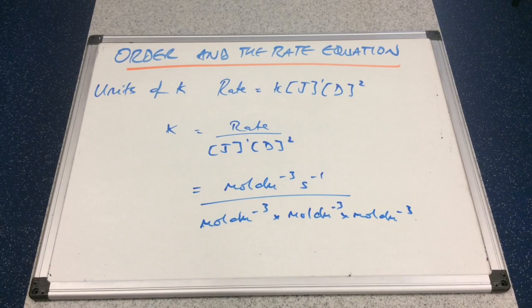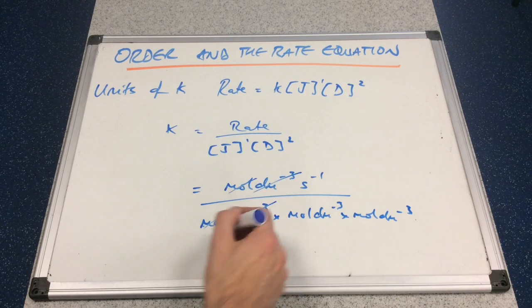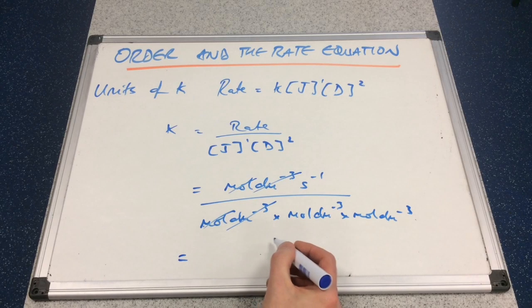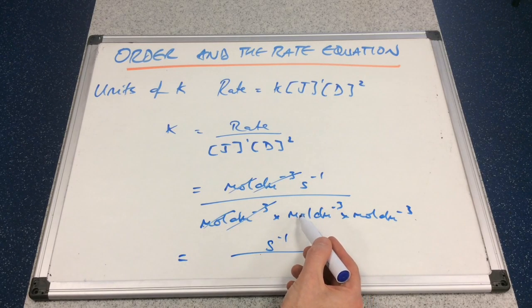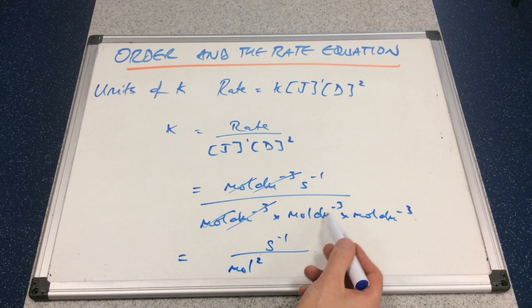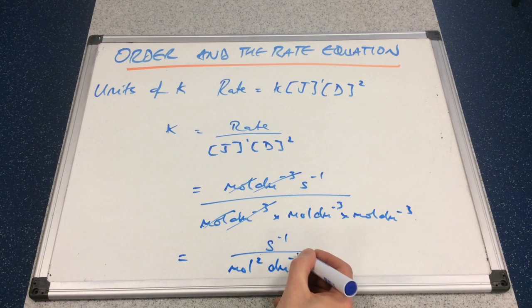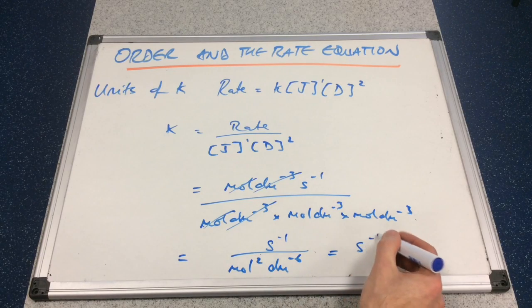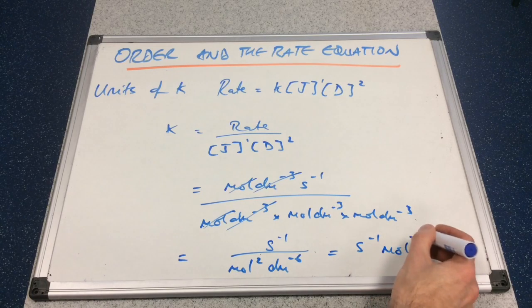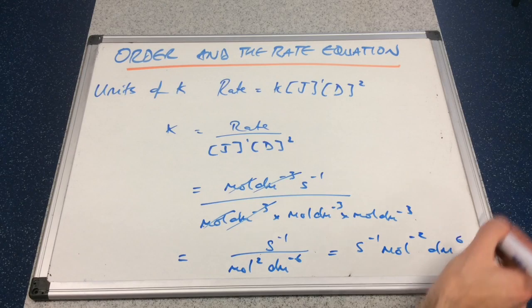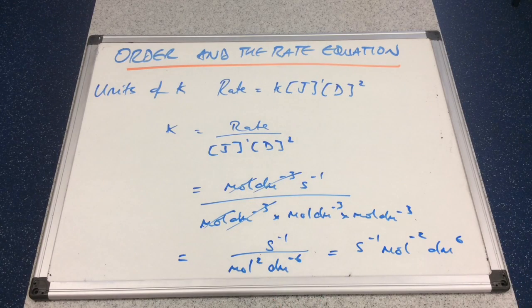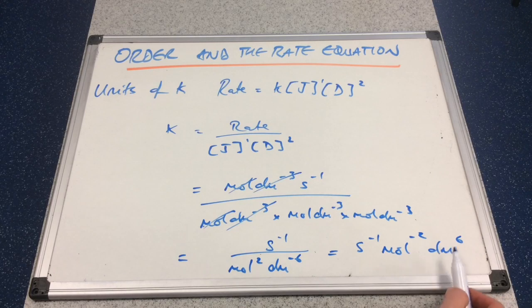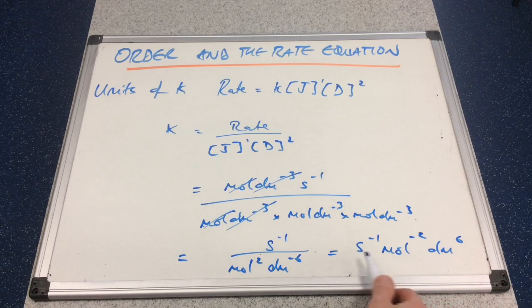Cancelling what we can: moles cancel with moles, dm⁻³ cancels with dm⁻³. We're left with s⁻¹ on top, and moles squared times dm⁻⁶ on the bottom. Bringing these up to the top changes the sign of the power, giving us s⁻¹, mol⁻², and dm⁶. Written properly with positive powers first: dm⁶ mol⁻² s⁻¹. That's the unit for K for this third-order reaction.